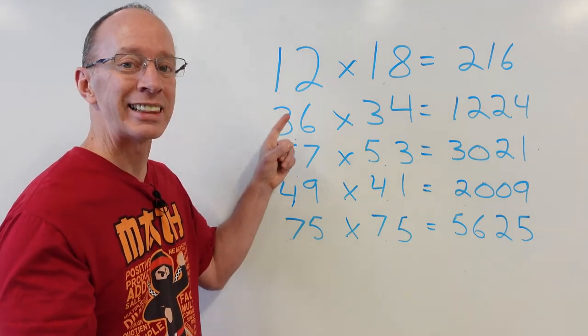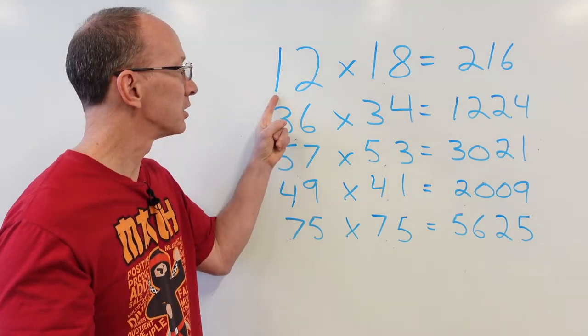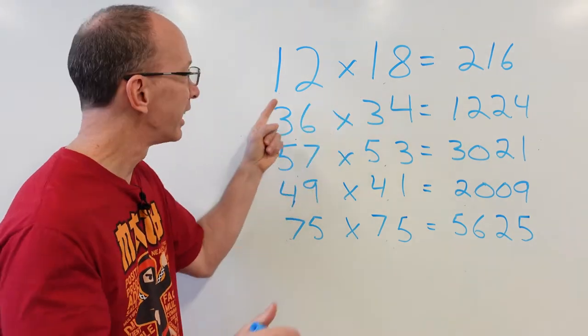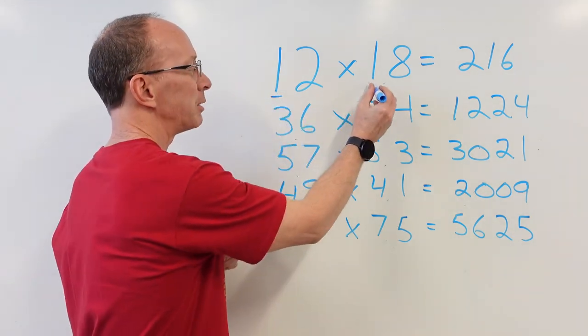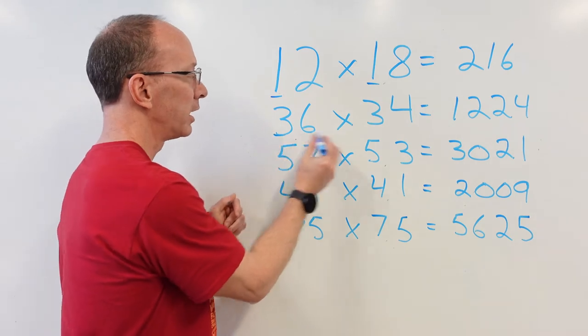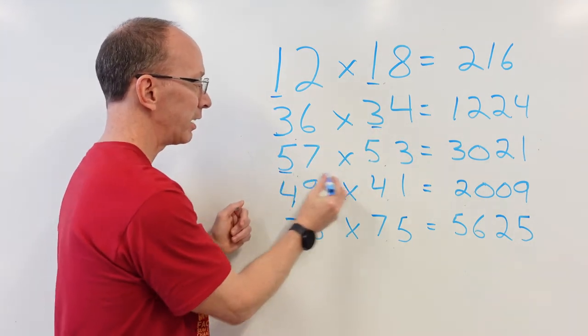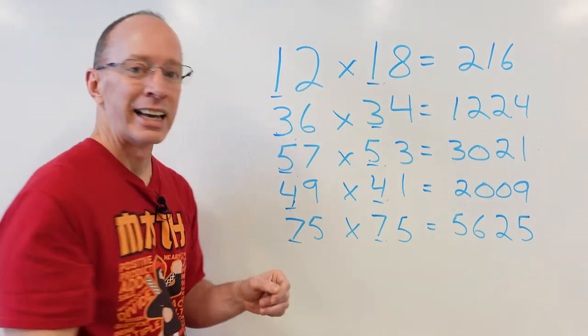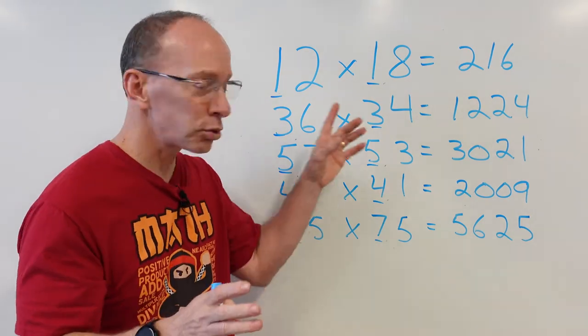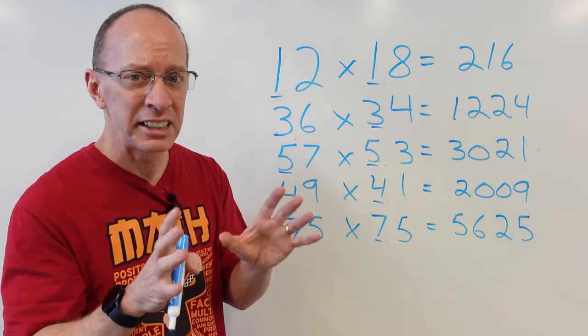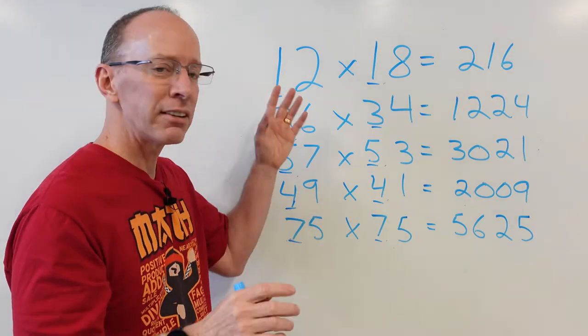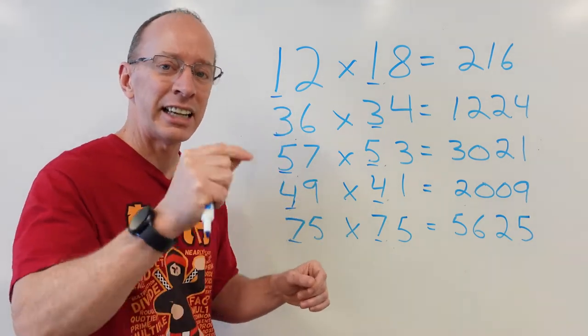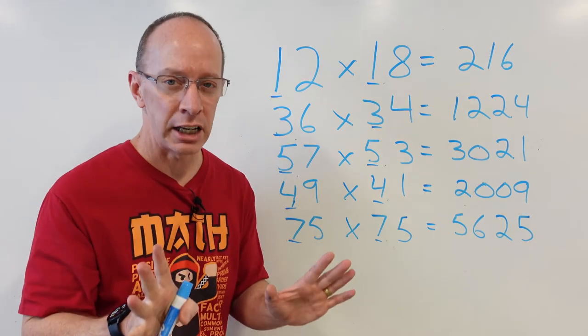Take a look at the numbers in the tens spot. Here's the tens place. That's the tens place. This one here is the same as that one there. Here's a three. There's a three. There's a five. There's a five. Four, four, seven, seven. In order to do this trick, this ancient ninja secret here, you have to have the numbers in the tens place the same.